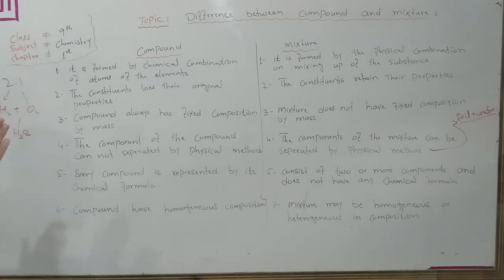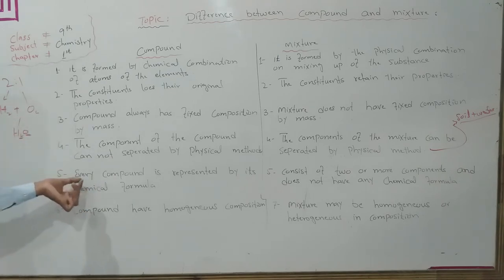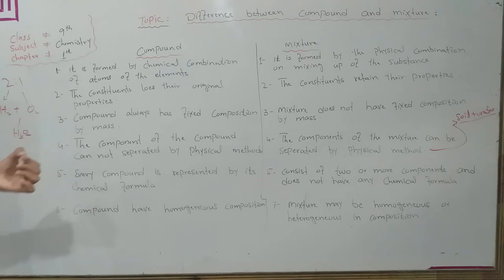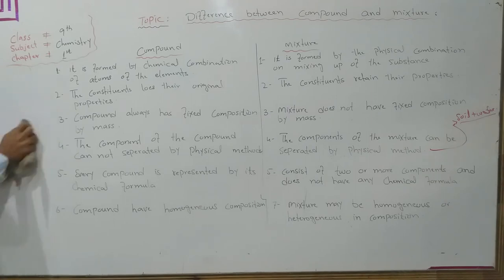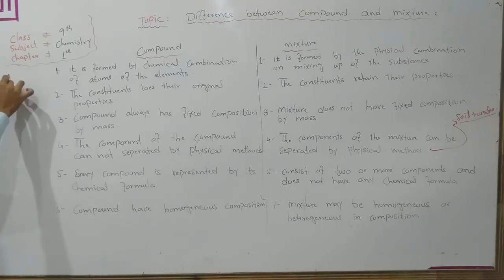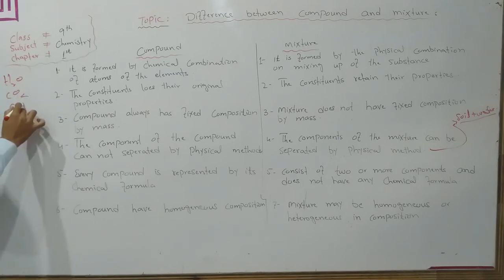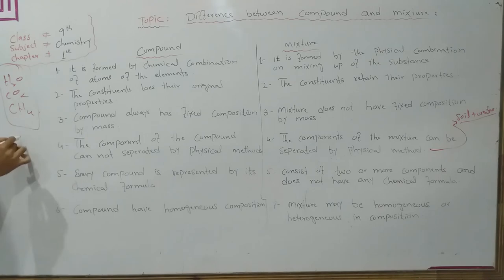Number 5: Every compound is represented by its chemical formula. Every compound represents a chemical formula. For example, H2O, CO2, CH4, NaCl — each compound represents its chemical formula.